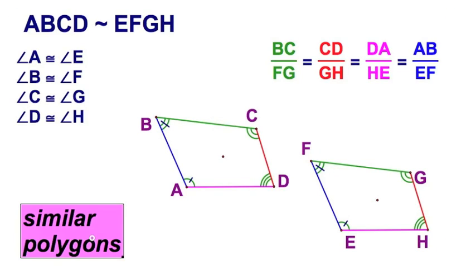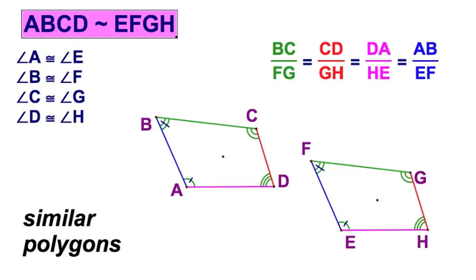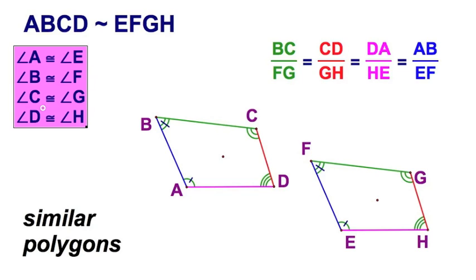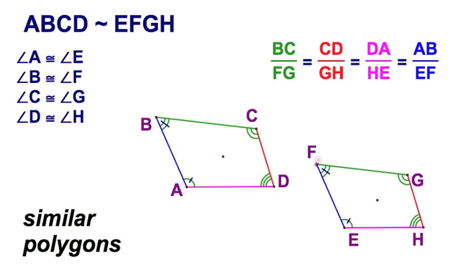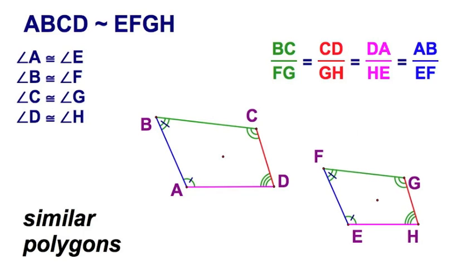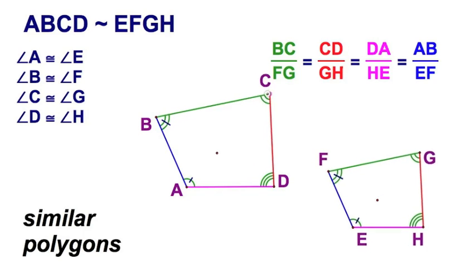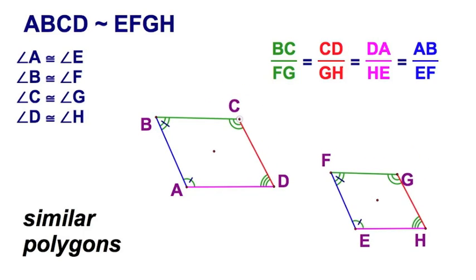Here we have similar polygons, and I'm going to make the statement ABCD is similar to EFGH. We've got a bunch of statements that are true right here - we have four congruences, that is, all pairs of their corresponding angles are congruent. These figures aren't the same size but they are the same shape; one is the enlargement or the reduction of the other.